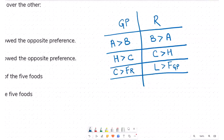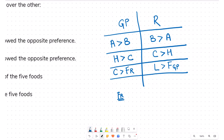Let's start with fr. We have five food items: A, B, C, H, and L. We know the guinea pig prefers cucumber over the rabbit's favorite food, so cucumber cannot be the rabbit's favorite — otherwise, how can GP prefer cucumber over cucumber? So we cancel out C. From the rabbit's preferences: rabbit prefers B over A, so A cannot be its favorite; rabbit prefers C over H, so H cannot be its favorite. We're left with two options: fr must be B or L.